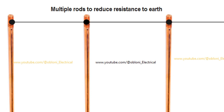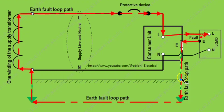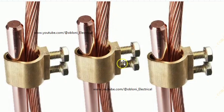In simple terms, proper earthing simply means providing a very low resistance path for fault currents that may occur between live conductors and earth to flow to earth. When connecting your earthing conductor to the earth electrode, you must use earth clamps for the connection, because that provides a good connection between the earthing conductor and the earth electrode. The earth fault loop path must have a very low resistance, and that includes the resistance at the termination of the earth electrode.